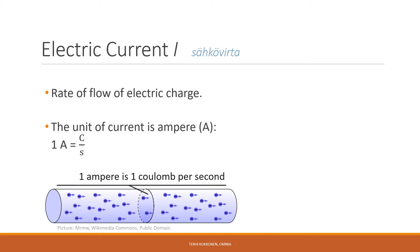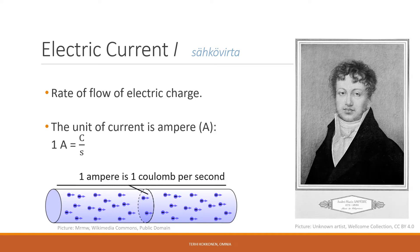Electrons flowing through a wire or ions flowing through a solution both constitute electric current. If charge flows in a conductor from one place to another, then the rate of flow of charge is called electric current. The SI unit of measurement of electric current is the ampere. One ampere of current represents one coulomb of electrical charge moving past a specific point in one second.